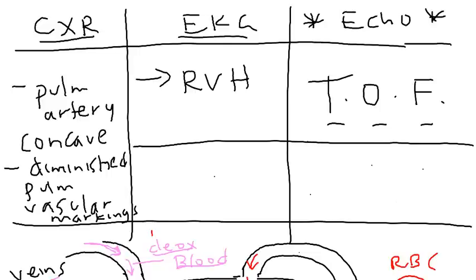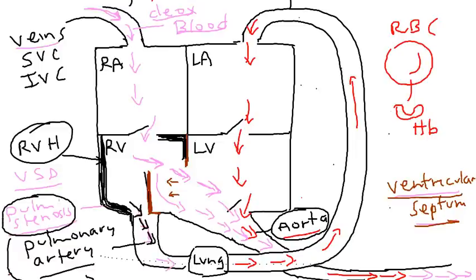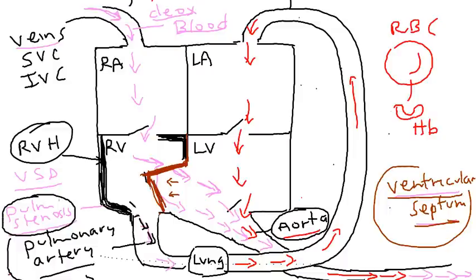The treatment of Tetralogy of Fallot is surgical. The ventricular septal defect has to be closed with a patch, and that can help solve the problem. You also need to resect the stenotic area, which relieves the pulmonic stenosis and opens up that nice, patent valve area, giving much more space for blood to flow through.